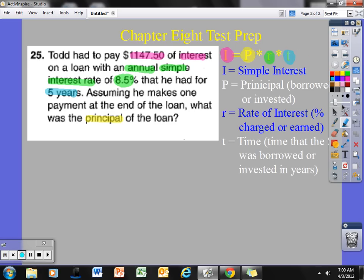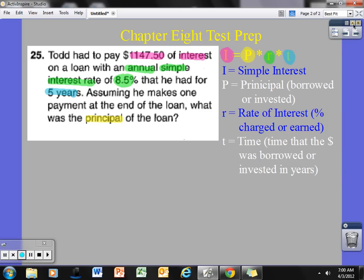So, now I am going to figure out what was the principal, what was the amount that he borrowed to begin with. We know that the $1,147.50 was the interest that was charged. But we need to figure out what he ended up borrowing to begin with. So, I am going to start with my formula. The formula for simple interest is I equals P, the principal, times the rate of interest, just how much I am being charged to borrow this money, what percent, times time in years.